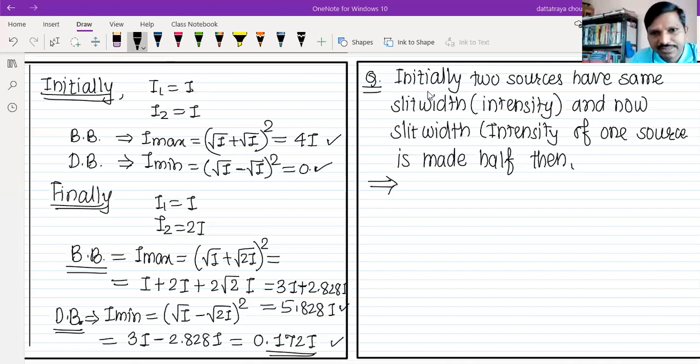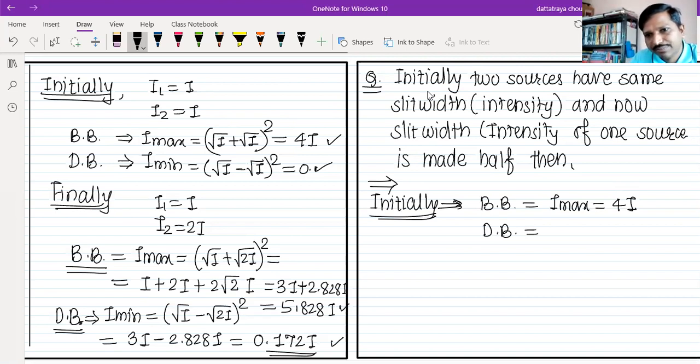Initially, what conditions are initially? BB increases, so IMAX increases, that is, 4I increases. And the dark fringe, minimum intensity is 0. This is the initial condition.